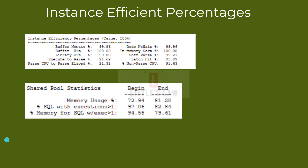The percentage SQL with executions greater than one and percentage memory for SQL with executions greater than one suggest good SQL statement reuse, but there is a decrease from the beginning to the end of the reporting period. The conclusion of these metrics is that the efficiency percentages indicate a well-optimized database in terms of buffer cache, redo log, and memory usage. However, there are areas for potential improvement in SQL execution efficiency and a slight decrease in SQL statement reuse towards the end of the reporting period.